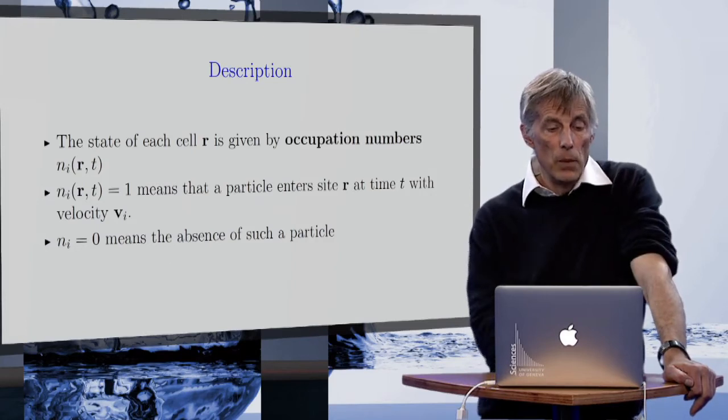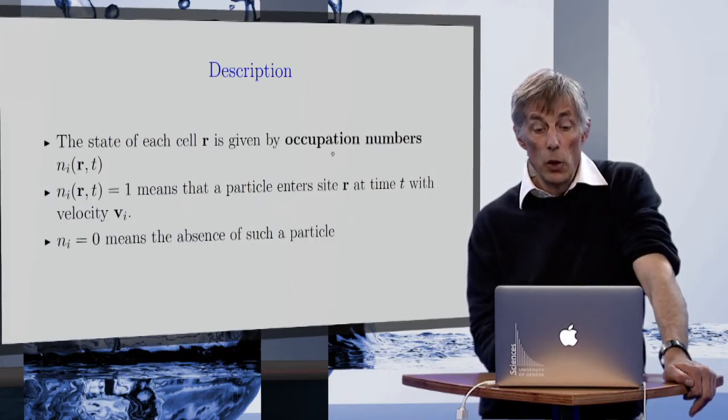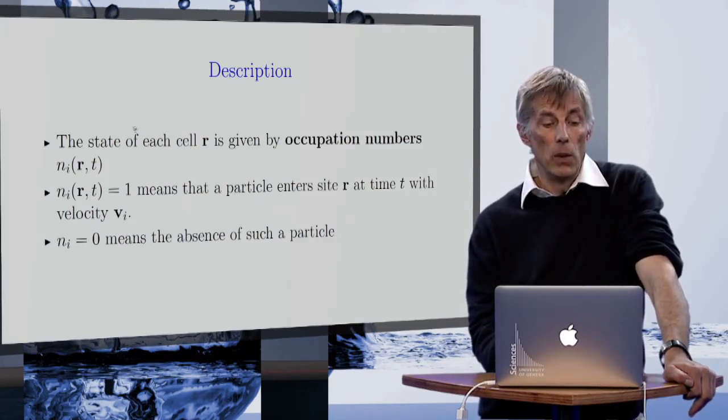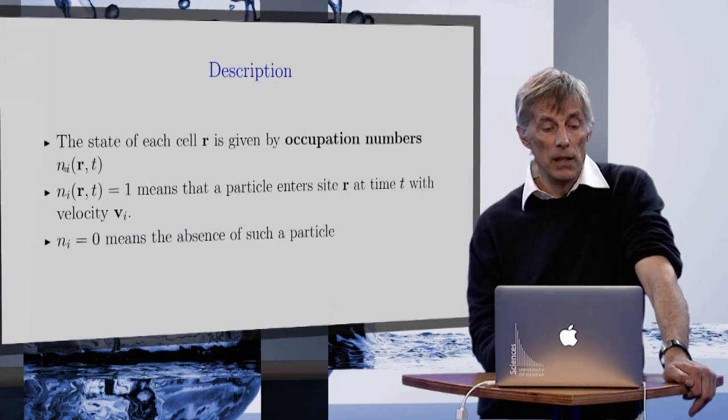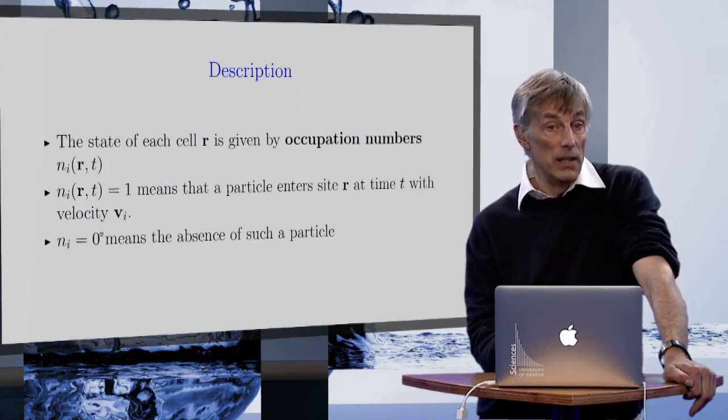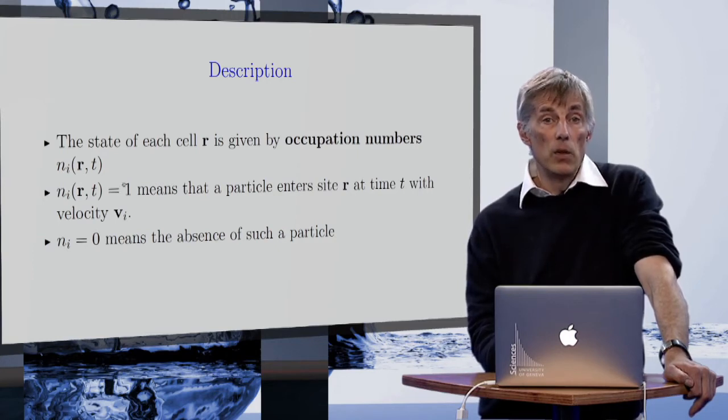To describe the system, we introduce what we call occupation number, and we call it Ni of Rt. It can be 1 or 0.